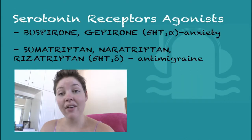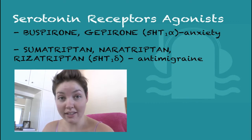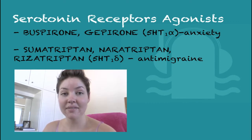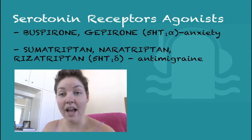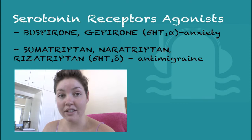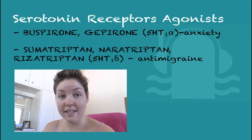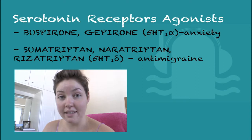Now I'm going to tell you about the serotonin receptor agonists, which are the drugs. Buspirone and gepirone are partial agonists of the 5-HT1A receptors and they are anti-anxiety drugs. Sumatriptan, naratriptan, and rizatriptan are 5-HT1D agonists. These are anti-migraine drugs. They cause vasoconstriction in the meningeal vessels. These are full agonists.